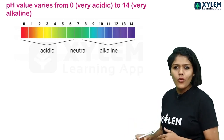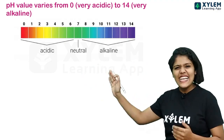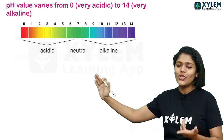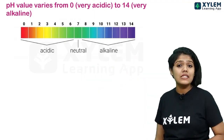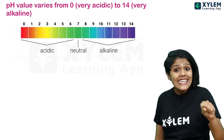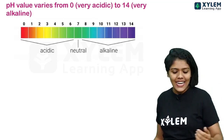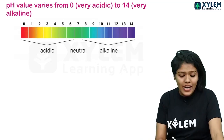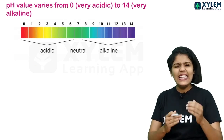Once we move from 7 toward 0 — 6, 5, 4, 3, 2, 1, 0 — the acidic character increases. The strongest acidic character is at pH value 0.